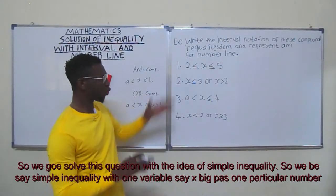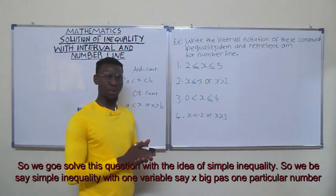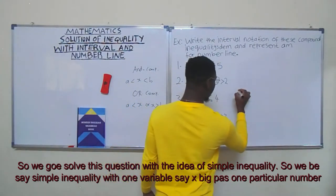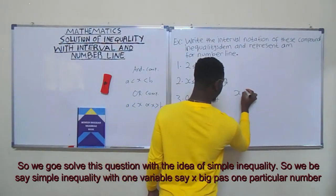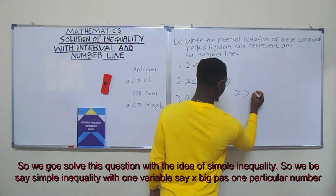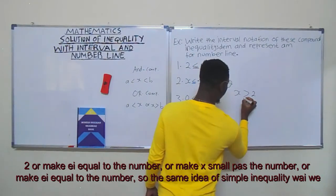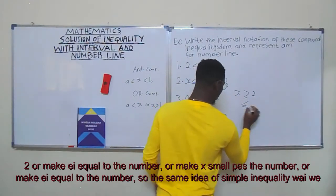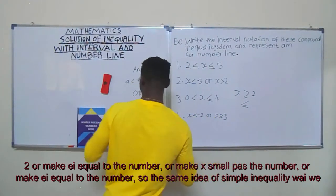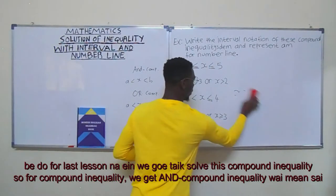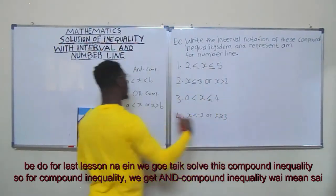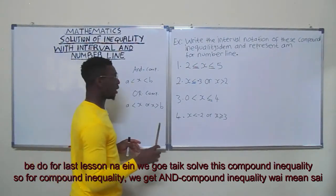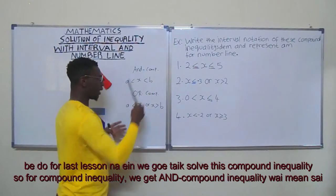We'll solve this question with the idea of simple inequality with one variable, say x greater than a particular number, or equal to a number, or x less than a number, or equal to a number. The same idea of simple inequality we did for the last lesson. Now we'll take some compound inequalities.